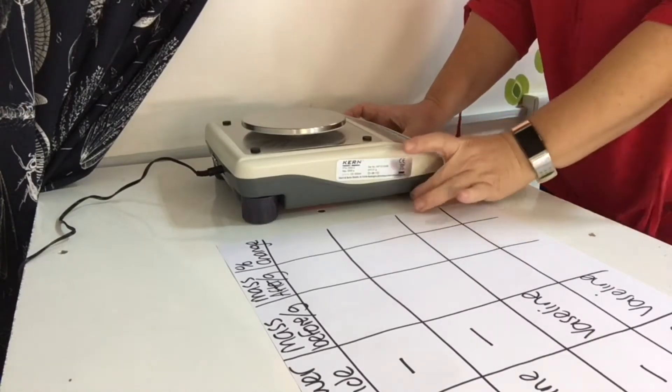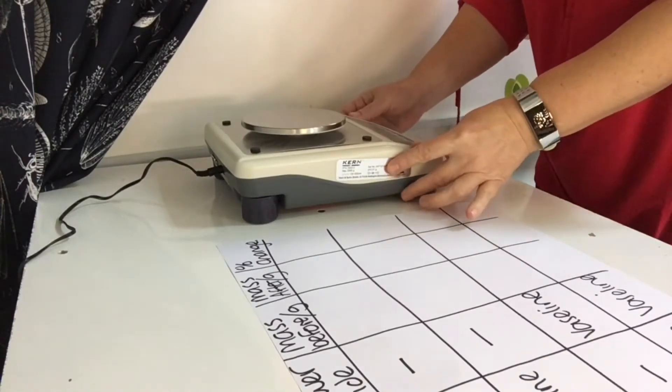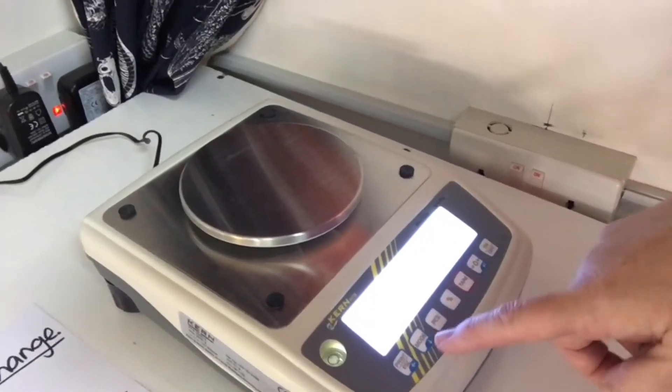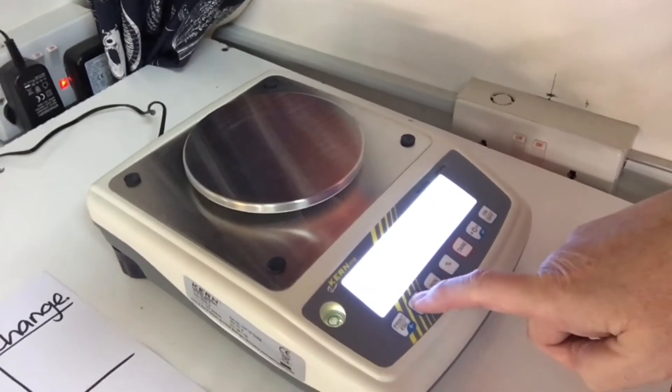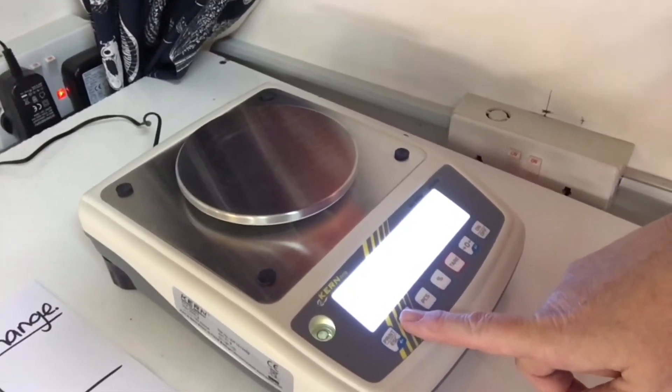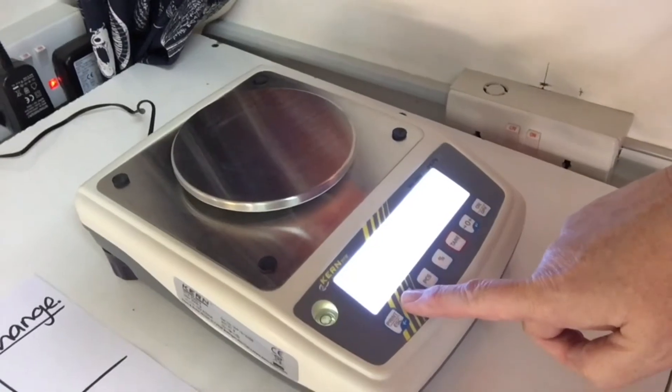I'm stabilizing my electronic balance now and making sure it's on the correct mode. You can measure things in grams but also in ounces and pounds. Here I'm pressing the mode button until I get it onto grams.